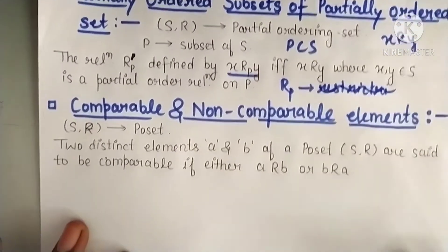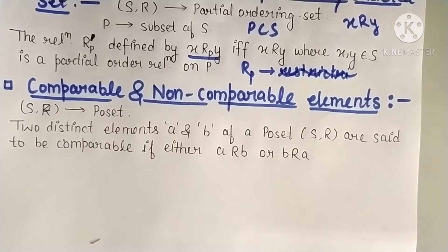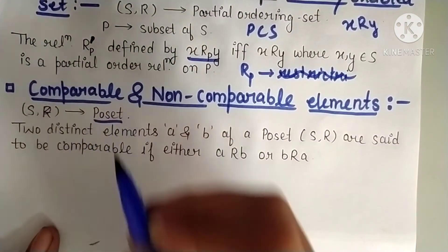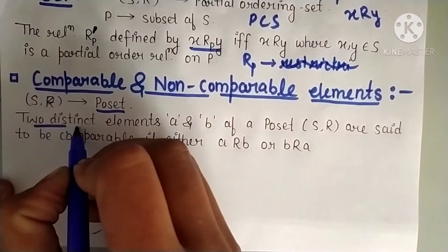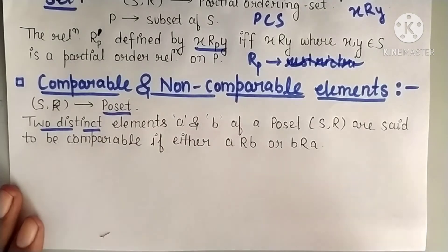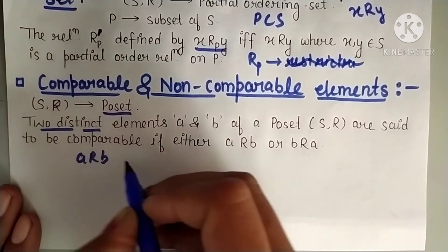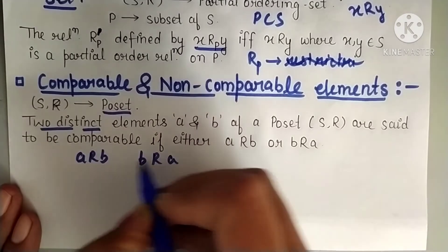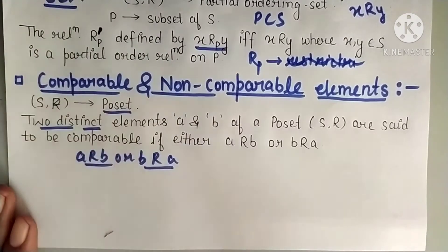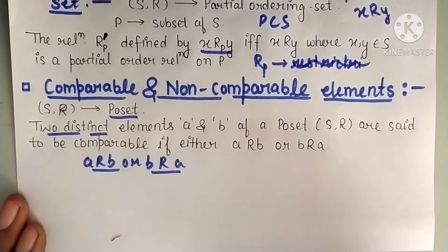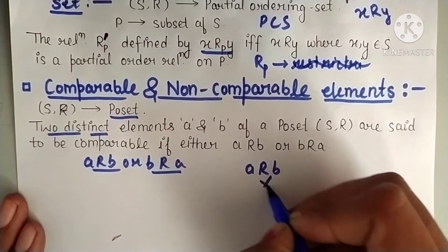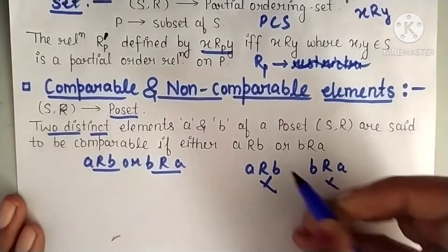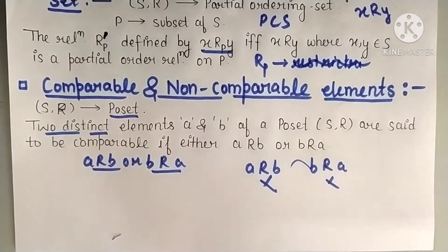Next definition is what are comparable and non-comparable elements. First thing we take a poset, means partially ordered set. So we took some poset (S,R). For any two distinct elements - first point is that elements should be distinct - for any distinct elements we will say they are comparable if a related to b or b related to a. If one of these conditions is true or both are true, even then we will say elements are comparable. And if neither of these is true, means neither a related to b should happen nor b related to a should happen. If these both don't happen then we say that the elements are non-comparable.